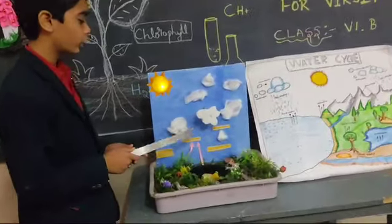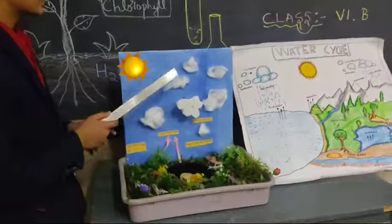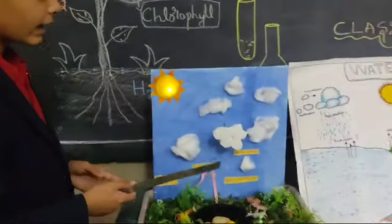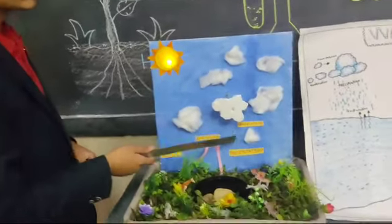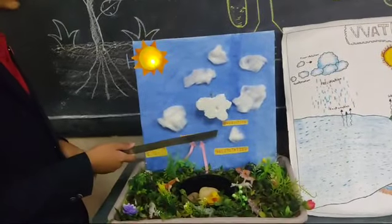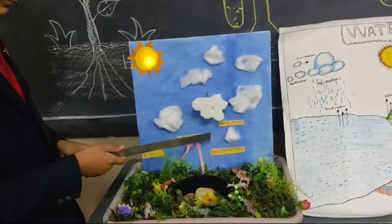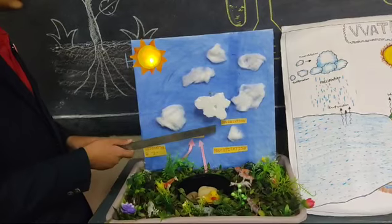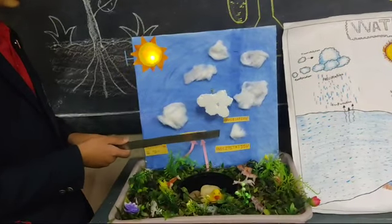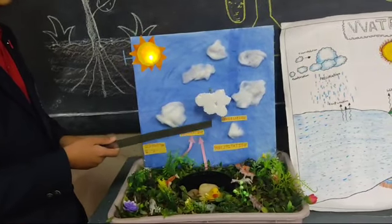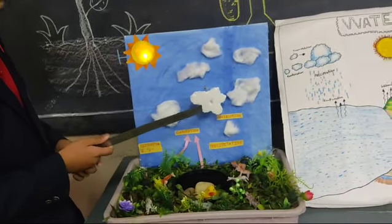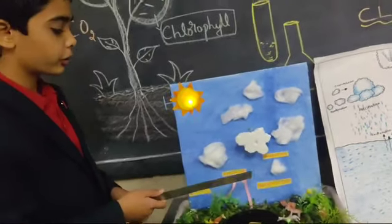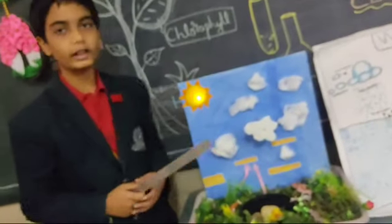After the water vapor condenses and makes clouds. This process is called condensation. After the clouds get heavy, they make rain. This process is called precipitation. Thank you.